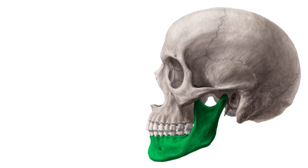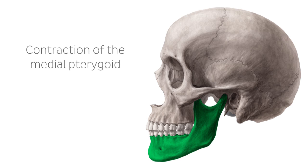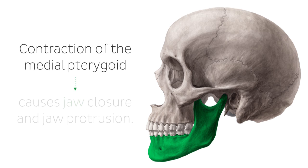The pterygoid muscles are muscles of mastication and serve the movement of the temporomandibular joint. The contraction of the medial pterygoid elevates the mandible, highlighted here in green, and moves it forward. Simply put, it causes jaw closure and jaw protrusion. These movements are reinforced by the muscle sling formed with the masseter.